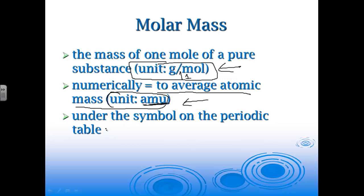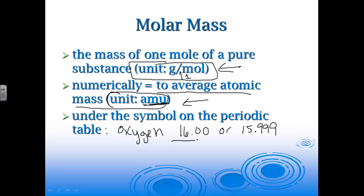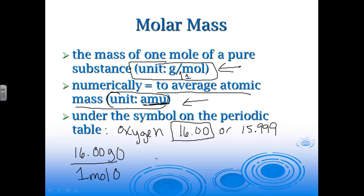Take out a periodic table and find oxygen. Somewhere under oxygen you'll find 16.00 or 15.999 depending on your source — our class tables use two decimal places, so we'll go with 16.00. The conversion factor is set up one of two ways: either 16.00 grams per one mole of oxygen, or one mole of oxygen over 16.00 grams. Whatever you want to go to goes on top; whatever you want to cancel out goes on the bottom.